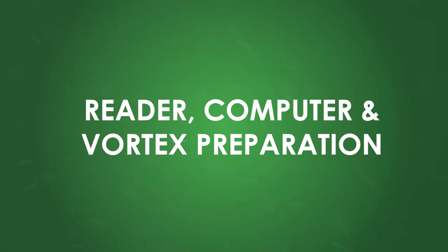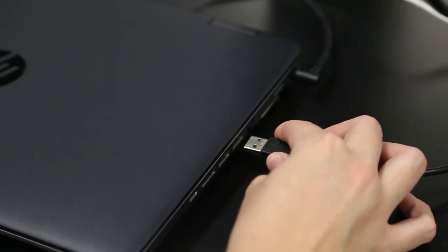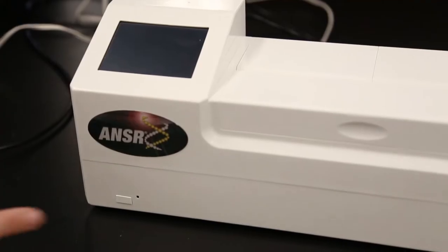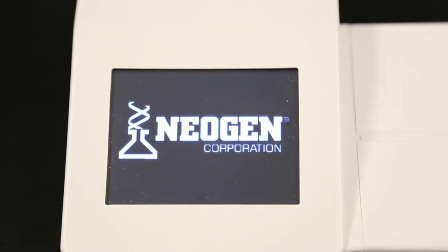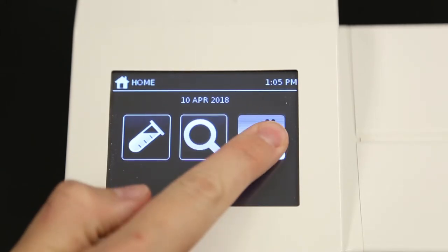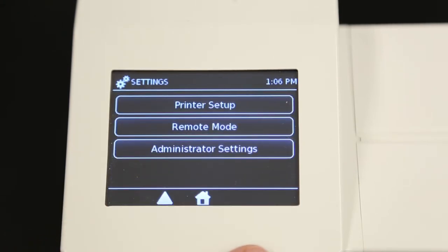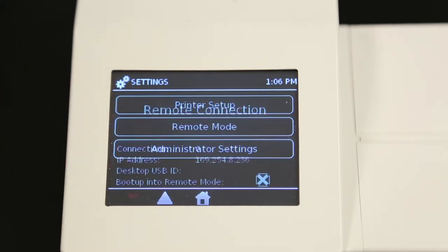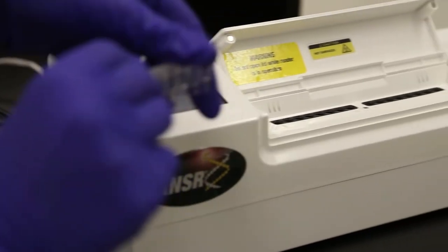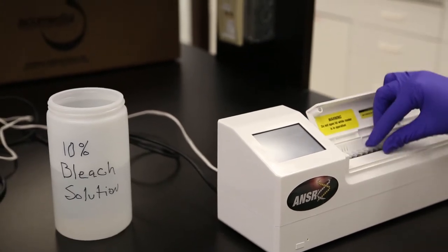Reader, computer, and vortex preparation. Make sure the ANSR reader and provided laptop are plugged in, and the connector is secure. Turn on the ANSR unit by holding the button on the front just for a moment. It takes about a minute to load the software. The first time you use the reader, select the third box on the touch display with the gears, then press the down arrow once. From here, select remote mode. The screen will say remote connection. Note, the reader's lid should remain closed except for placing reaction tubes in or taking them out.